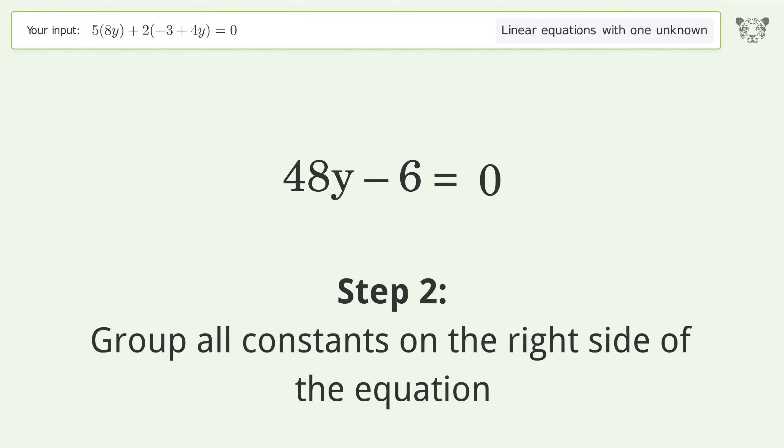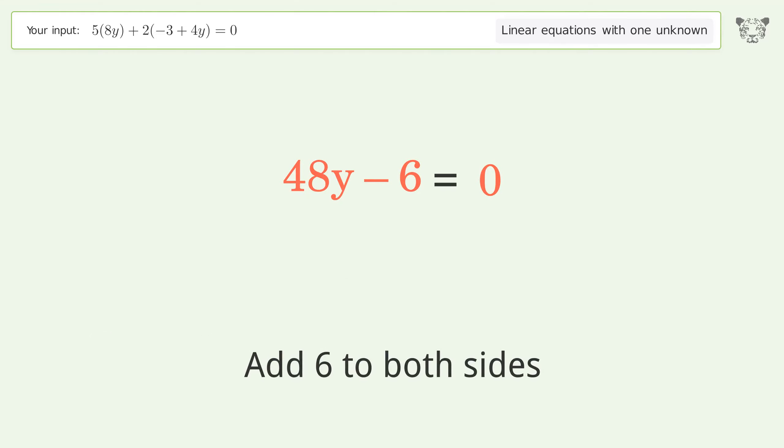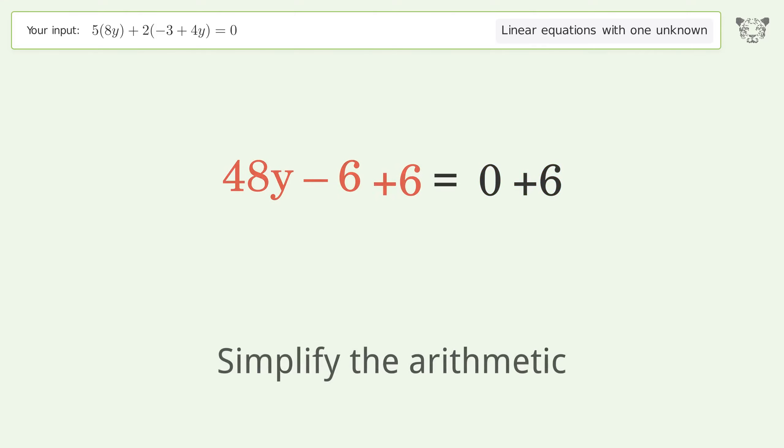Group all constants on the right side of the equation. Add 6 to both sides. Simplify the arithmetic.